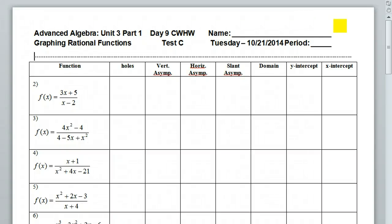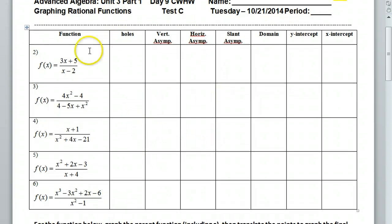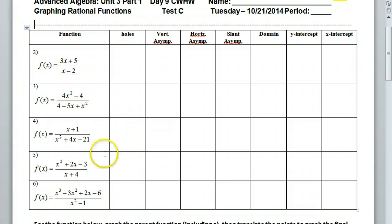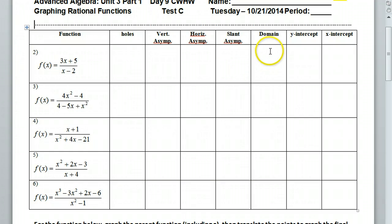This is part two of our lesson reviewing graphing rational functions. In part two, we're going to look at these five functions and figure out, just by looking at the equations, what are the holes, vertical asymptotes, horizontal asymptotes, slant asymptotes, the domain, and the x and y intercept.